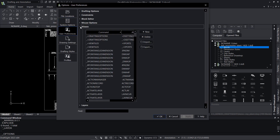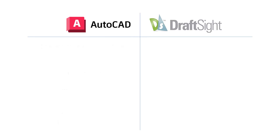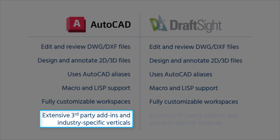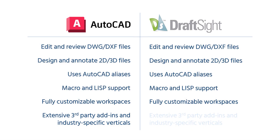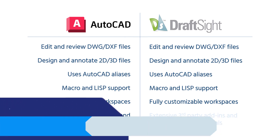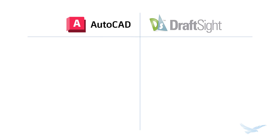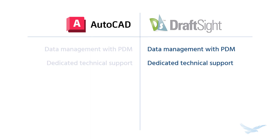Up to now, we've focused on the similarities between AutoCAD and DraftSight — and there are certainly a lot of them — but what about the differences? While the core functions of both programs are to create, review, and edit 2D drawing files, AutoCAD offers many add-ins that extend its functionality with powerful industry-specific tool sets for AEC, electrical, and facility management, among many others. While DraftSight does offer a handful of add-ins and a version geared toward mechanical designers, it can't yet compete with the breadth of extensions available for AutoCAD. DraftSight does have its own advantages though: data management is controlled through PDM, which is particularly helpful for companies already using SOLIDWORKS 3D CAD since it uses the same documentation management system. DraftSight also offers dedicated technical support through Hawkridge Systems, with experts prepared to help handle tough obstacles and keep projects on track.